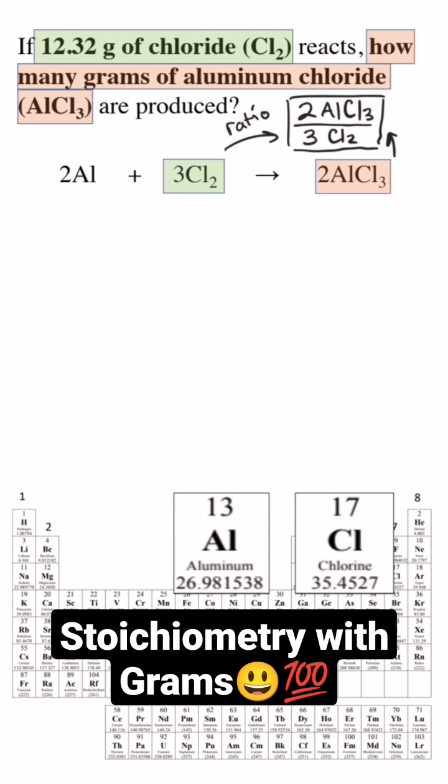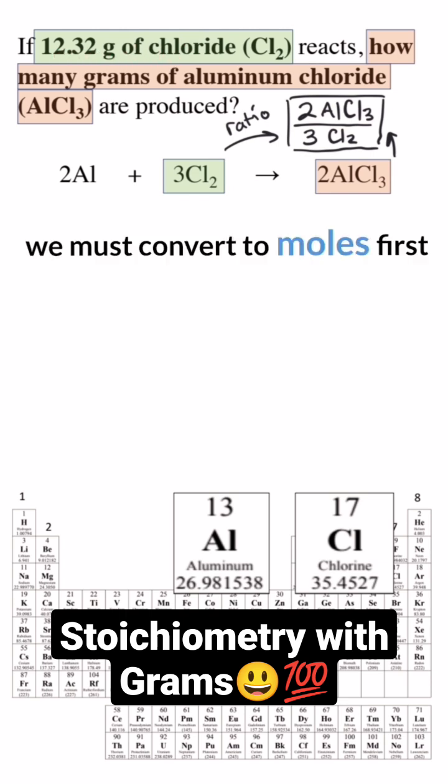We are trying to solve for the mass of aluminum chloride and we were given the quantity of chlorine in units of grams. We can only perform the calculation to aluminum through the unit of moles,